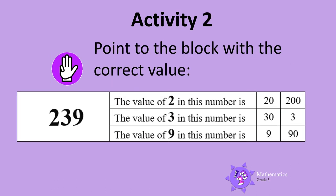Activity 2. Say this number out aloud: 239. Point to the block with the correct value. 2 is in the hundreds column, so the value of 2 in this number is 200. 3 is in the tens column, so the value of 3 in this number is 30. 9 is in the ones column, so the value of 9 in this number is 9. Nice!